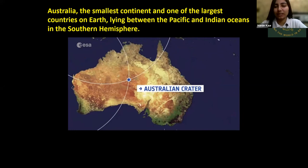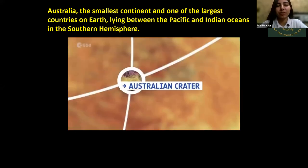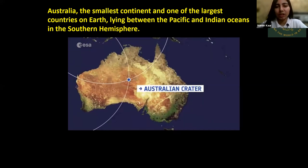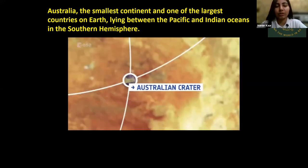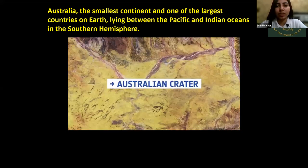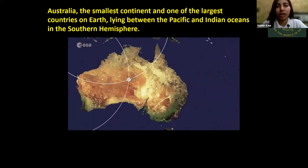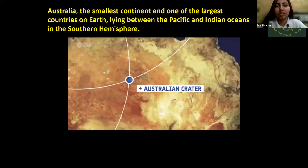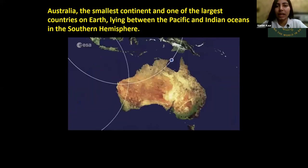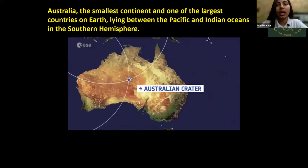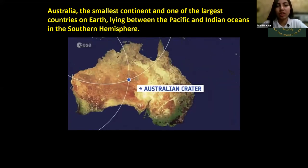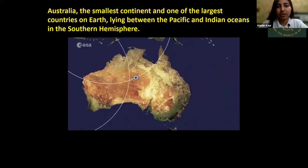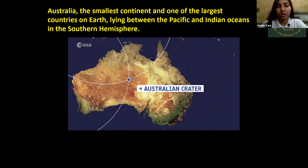Now we can start with today's tour. First we will look at the location of Australia. Australia is an island country — here you can see the image zooming into the country. It is the smallest continent and the largest country on Earth, lying between the Pacific and Indian Oceans in the Southern Hemisphere. Here you can see the live image of Australia's location.